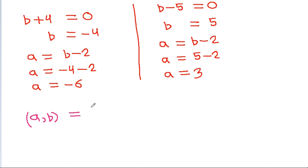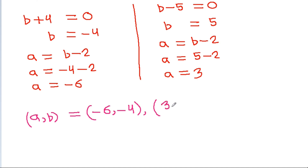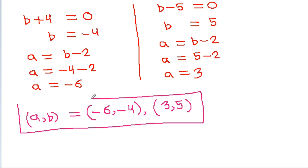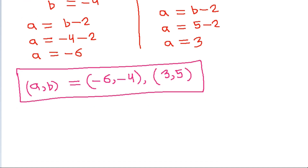So the solutions are: a = minus 6 and b = minus 4, or a = 3 and b = 5. Now the second method.